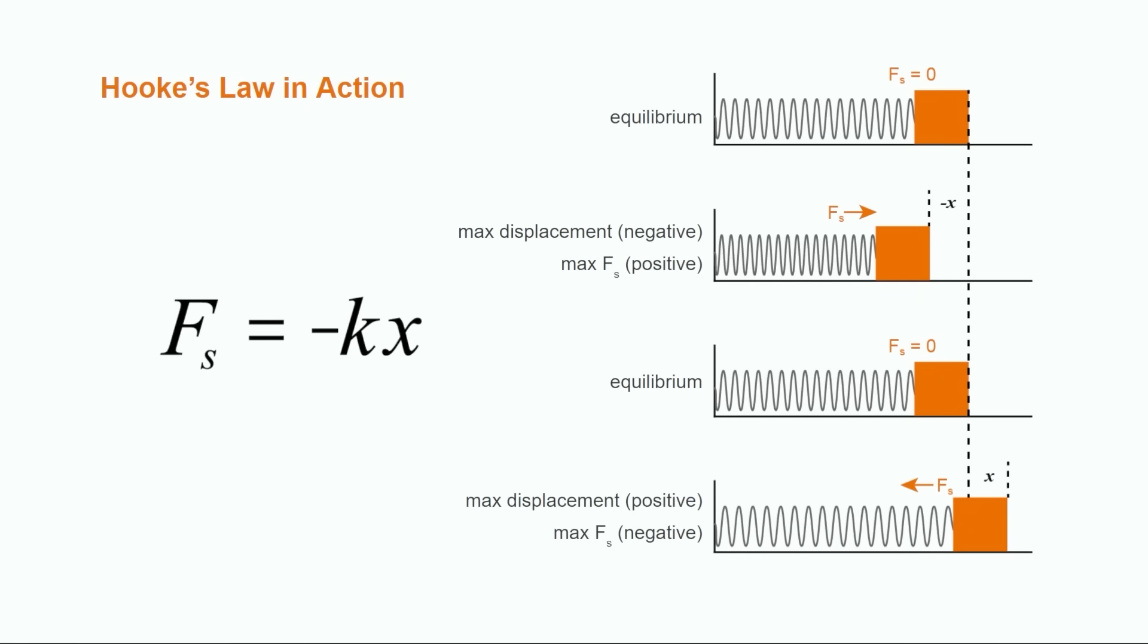When the spring pushes the object back to equilibrium, there's no force being exerted on the object, but the object's momentum causes it to keep moving. This causes the spring to stretch and start to pull back on the object with a negative force. Eventually, the force on the object from the spring will be great enough to stop the object. At this point, the object will be the same distance from equilibrium as it was when it was first released.